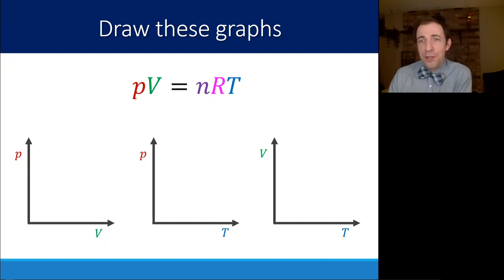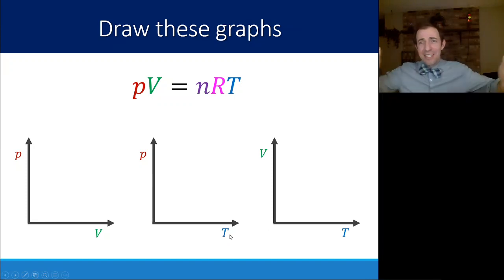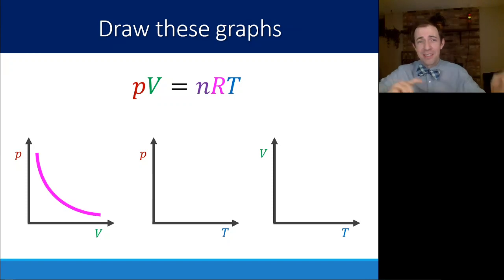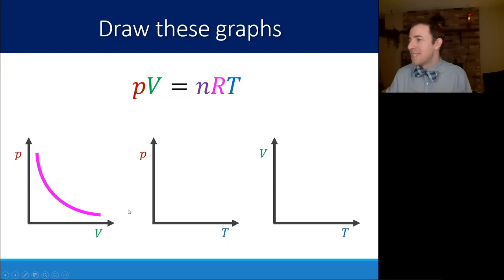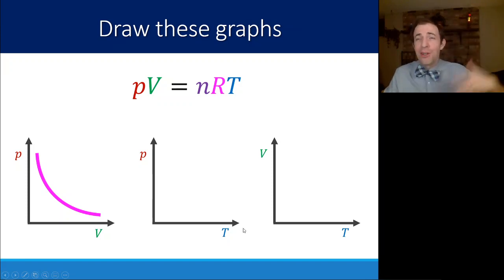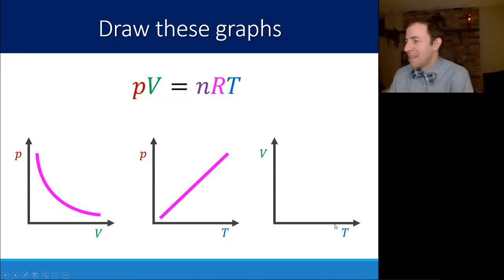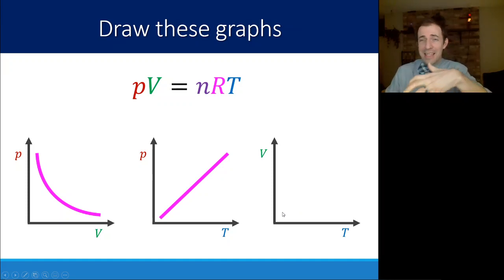You should be familiar with these relationships well enough to draw the graphs. If volume is increasing at constant temperature, the pressure must decrease because molecules hit the walls less frequently and impart less force. If temperature is increasing, molecules move faster, hit harder, and pressure increases. In the same way, if temperature increases and molecules move faster, at constant pressure that creates a higher volume.